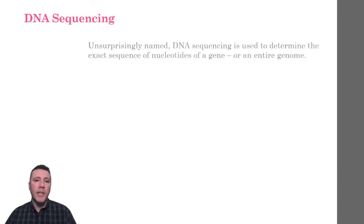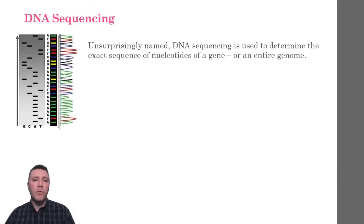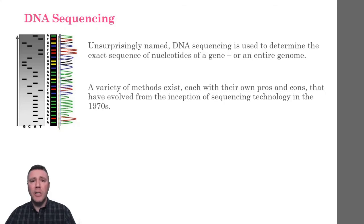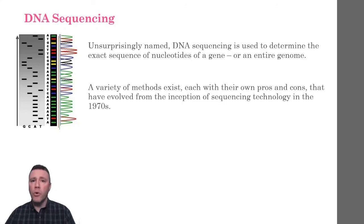The final biotechnology is one with a self-explanatory name: DNA sequencing. This technology is used to determine the sequence of nucleotides for a given DNA sample, an entire gene, or whole genome. Since its beginnings in the 1970s, the technologies involved in DNA sequencing have changed rapidly. They have evolved from a tedious, time-consuming, expensive process that incorporated elements of gel electrophoresis to a highly automated, computer-controlled process.